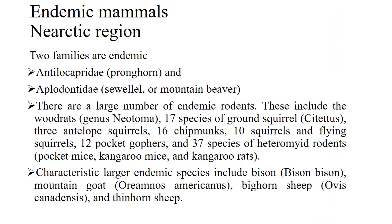The endemic mammals of the Nearctic region: there are two families endemic to this region — Antilocapridae and Aplodontiidae. The example of Antilocapridae is the pronghorn, and the example of Aplodontiidae is the mountain beaver. There are also a large number of endemic rodents, including wood rats, 17 species of ground squirrels, 3 antelope squirrels, 16 chipmunks, 10 tree squirrels and flying squirrels, 12 pocket gophers, and 37 species of heteromyid rodents. Characteristic larger endemic species like bison, bighorn sheep, and thinhorn sheep are also present.